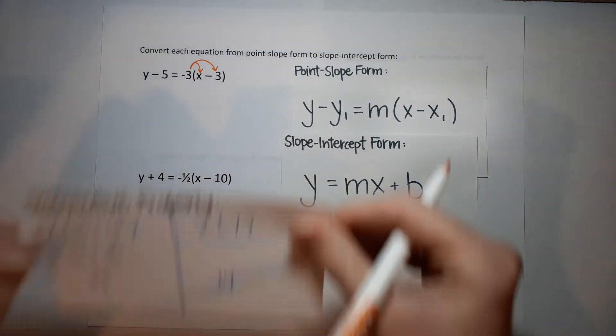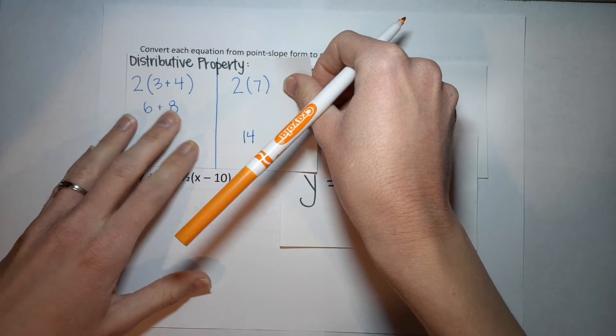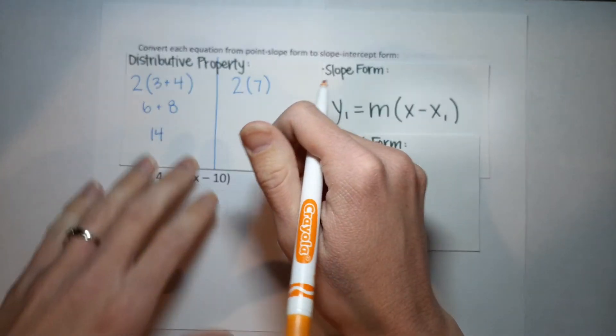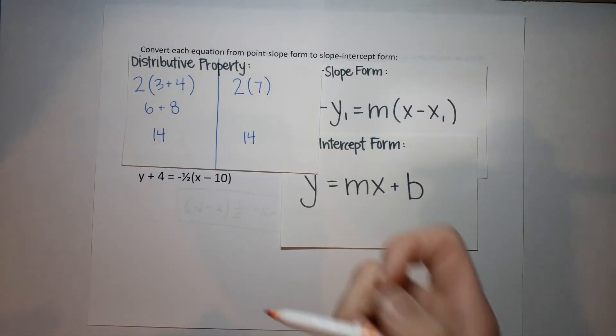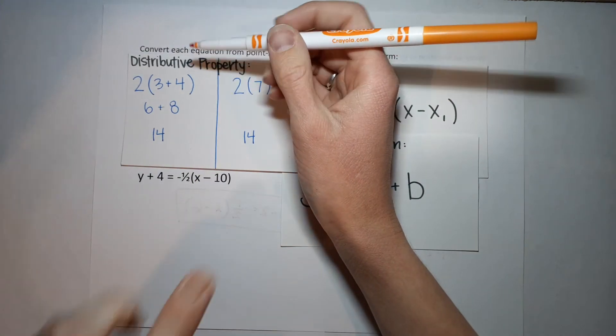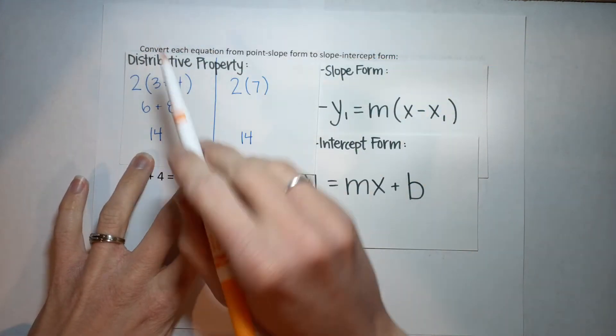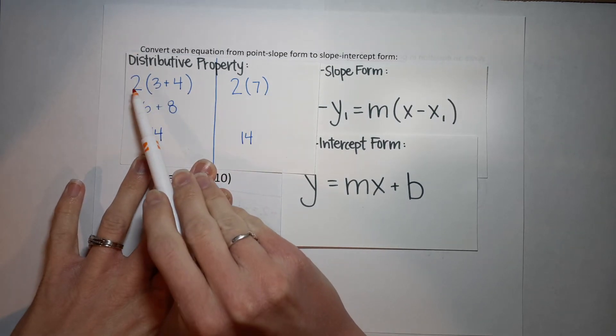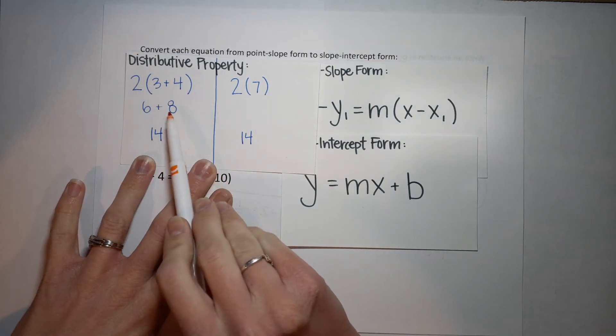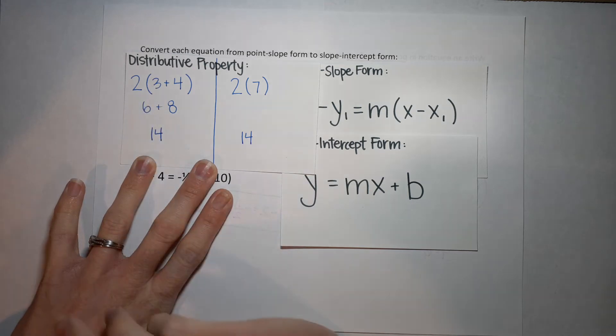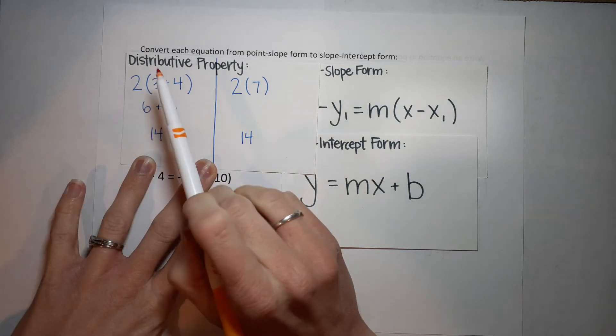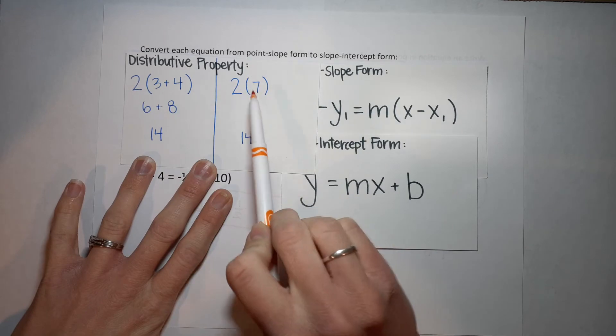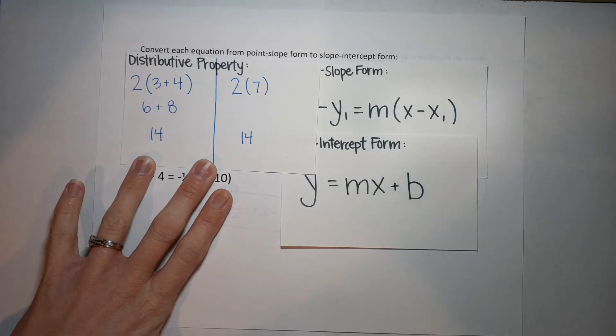Really quick, let me show you this. If you don't care, then just plug your ears for the next 15 seconds. But I hope you care. The reason this works is because if I have 2 times 3 plus 4, and I multiply the 2 times the 3, I get 6. Then I multiply the 2 times the 4, I get 8. I add those together, I get 14. Now, if I were to add those first, 3 plus 4 gives me 7. 2 times 7 is 14.